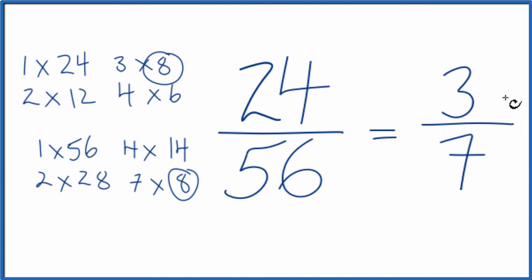And we can't reduce this any further. If you didn't know that 8 was a common factor, you could divide both of these by 2, that would give you 12/28, and you might be able to simplify that easier.